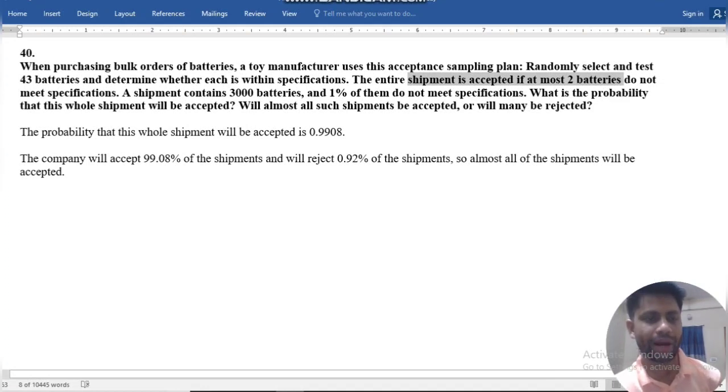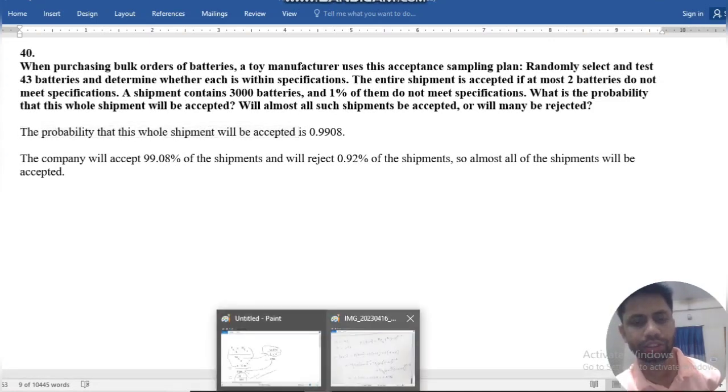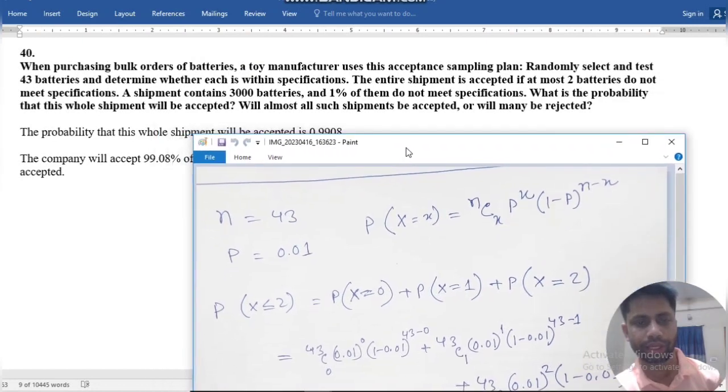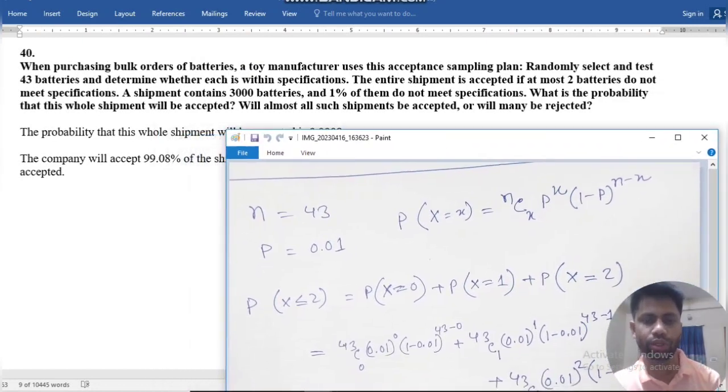So, find the probability that the whole shipment will be accepted. We can do this way. Here, n is equal to 43 and p equals 0.01. This follows binomial distribution.